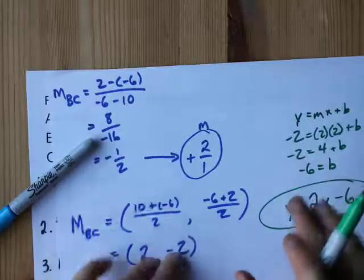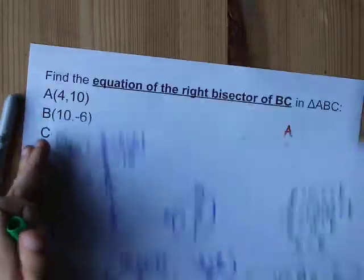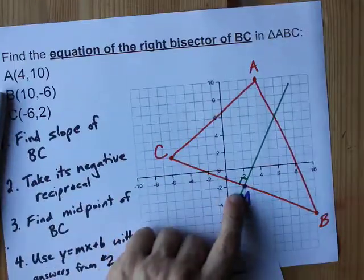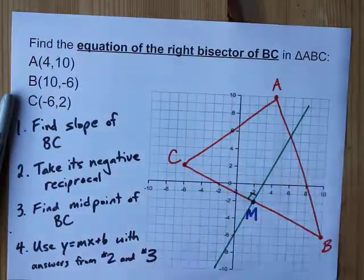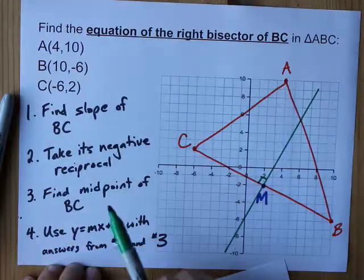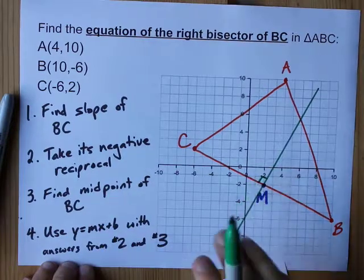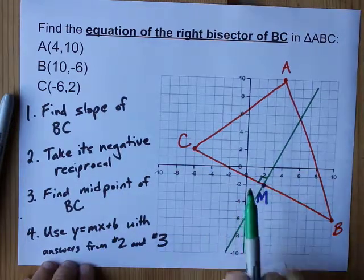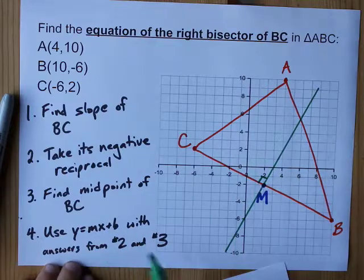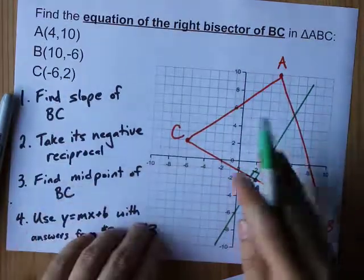The point of a right bisector is that it goes through the midpoint of one of the sides and meets it at a 90 degree angle. So you've got to find the slope of that side, take its negative reciprocal. That's what makes it 90 degrees or perpendicular. You've got to find the midpoint and then use that info to get the y equals mx plus b. Pretty straightforward.